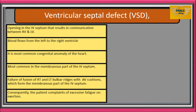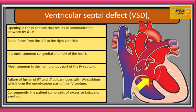Ventricular septal defect is a condition where there is a defect or opening in the interventricular septum that results in communication between the right and the left ventricles. Blood flows from the left to the right ventricle. It is actually the most common congenital anomaly of the heart, and is most common in the membranous part of the interventricular septum.